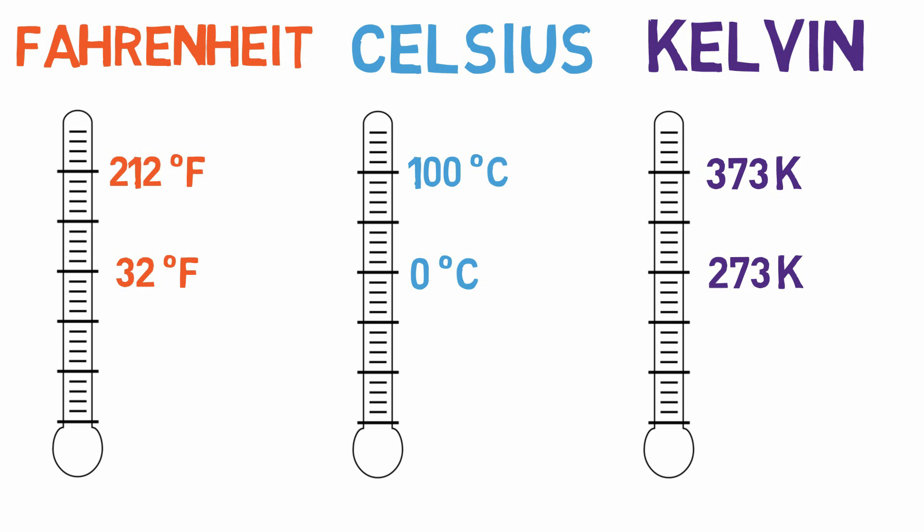The Kelvin scale is based on absolute zero. This is the lowest temperature that is theoretically possible, and puts atoms in their lowest energy state. So absolute zero is zero Kelvin, which is approximately negative 273 degrees Celsius and negative 459 degrees Fahrenheit — which is pretty chilly.